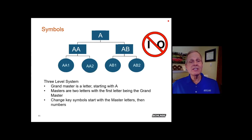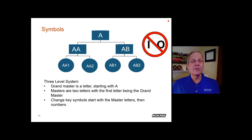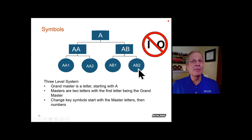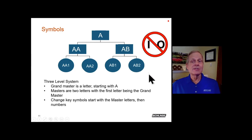When it comes to change keys, they all start with the master key letter pair of the master directly above them. For example, AA1 indicates it is the first change key under the AA master. A change key labeled AB2 is the second change key under the AB master. So change keys have the master key letter pair followed by a number.